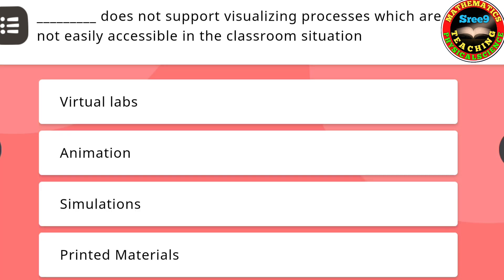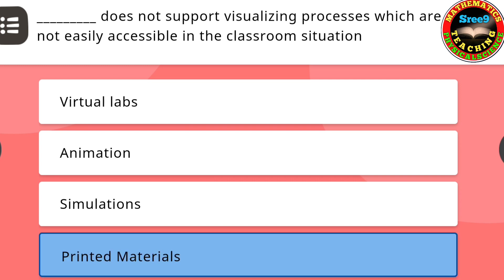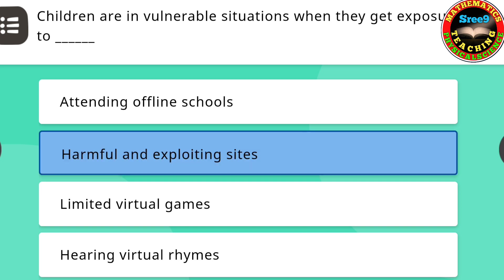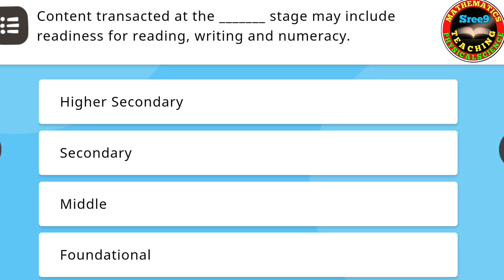Next question: Dash does not support visualizing processes which are not easily accessible in a classroom situation. The correct answer is: printed materials. Next question: Children are in vulnerable situations when they get exposure to dash — the correct answer is: harmful and exploiting sites. Next question: Content transacted at the dash stage may include readiness for reading, writing, and numeracy. The correct answer is: foundational.